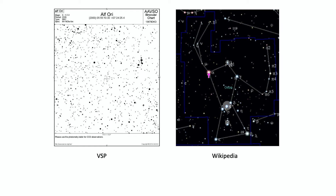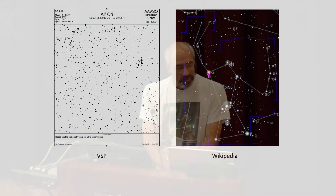Betelgeuse is a very special, complicated star to get observations on. Are there any nearby comparison stars? Being a zero-to-one magnitude star limits the range of local stars you can use for comparisons.